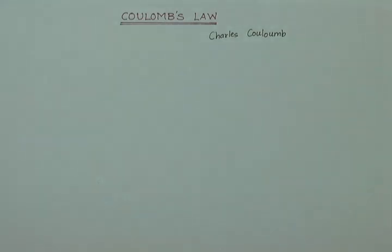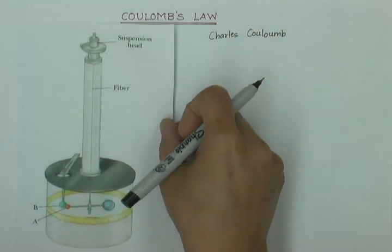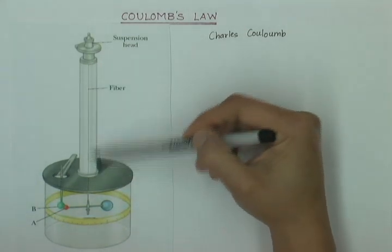To do that, he designed an apparatus called a torsion balance. We have a figure of the torsion balance here. And what this apparatus has is a torsion fiber or a torsion wire.